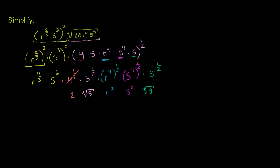So we have r to the 4/3, times s to the 6th, times 2, times square root of 5, times r squared, times s squared, times the square root of s. Let's write the 2 out front first. Now let's combine the s terms: s to the 6th times s squared is s to the 8th. And we have r to the 4/3 times r squared. r to the 4/3 is the same thing as r to the 1 and 1/3, so 1 and 1/3 plus 2 is 3 and 1/3. So we get r to the 3 and 1/3.